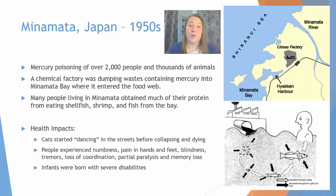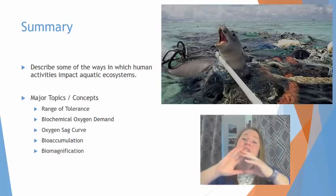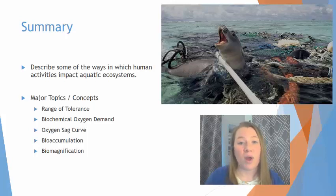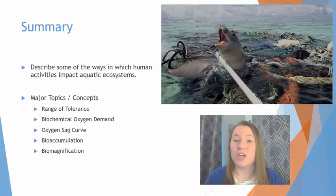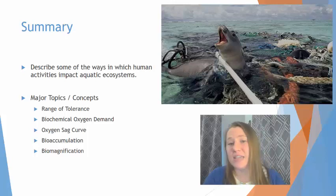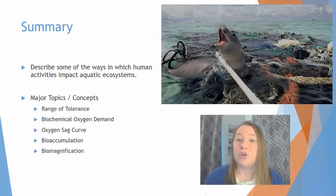These impacts on aquatic environments also impact humans. In summary, you need to be able to describe some of the ways in which human activities have impacted aquatic environments. The main concepts we discussed in this video included the range of tolerance, biochemical oxygen demand, oxygen sag curve, bioaccumulation, and biomagnification. Please rewatch any sections of this video that you need to take more notes on or need clarification on, and send me your questions.